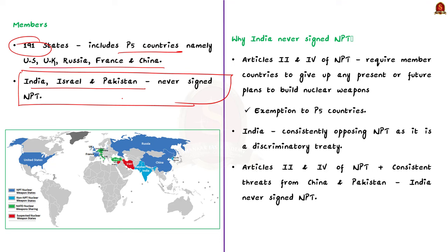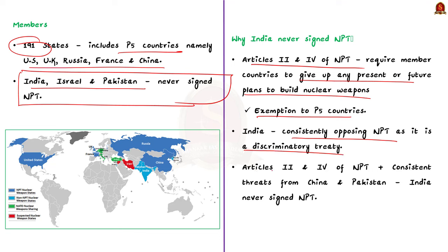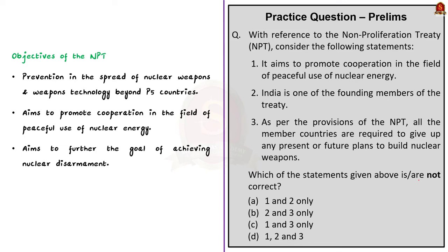India did not sign the NPT because articles 2 and 4 require countries to give up any present or future plans to build nuclear weapons, but the same articles exempt the P5 countries from such requirements. India consistently opposes the NPT by terming it a discriminatory treaty. The objectives of NPT are: first, to prevent the spread of nuclear weapons and nuclear technology beyond the P5 countries; second, to promote cooperation in the peaceful use of nuclear energy; and finally, to further the goal of achieving nuclear disarmament.